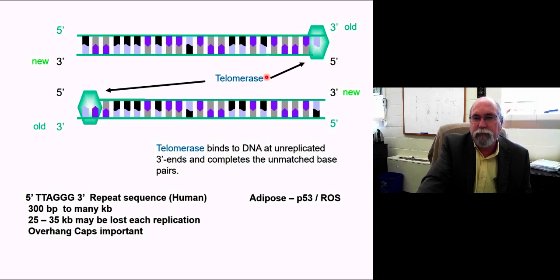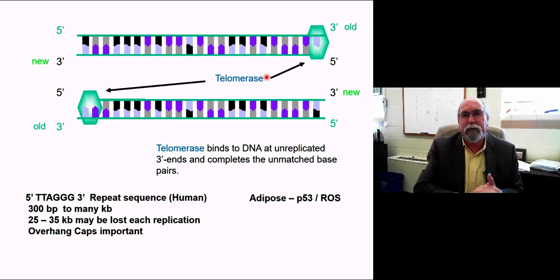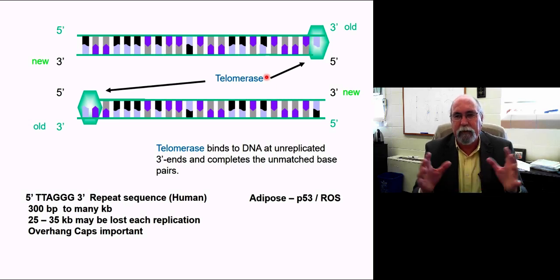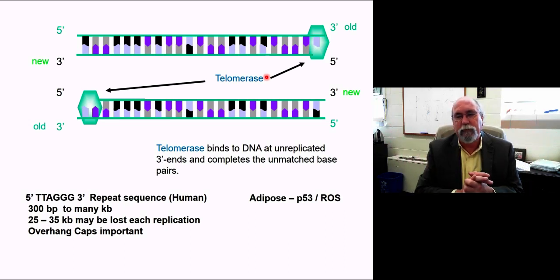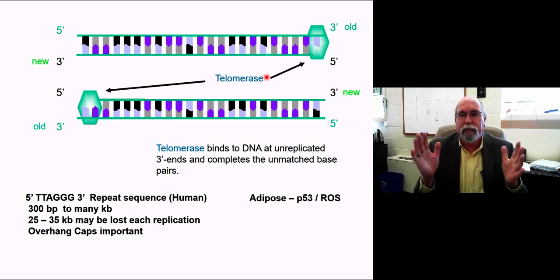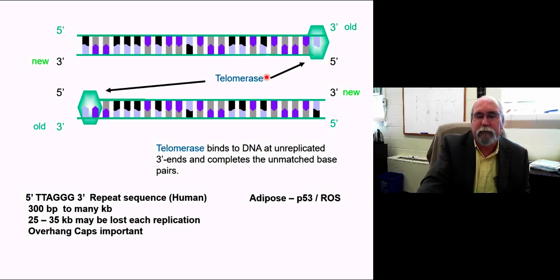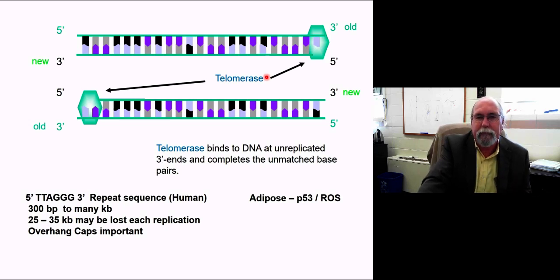We will lose sometimes 25, 30,000 bases down through this region. So, they do significantly become shorter and shorter and shorter through each replication. And again, we talked about that being the Hayflick prediction, the Hayflick phenomenon that as cells get older that we can tell because the chromosomes are getting shorter and shorter. At some point, that leads to sort of this idea of senescence, that the cells just get so short, at least the chromosomes get so short, it signals the cells to die.